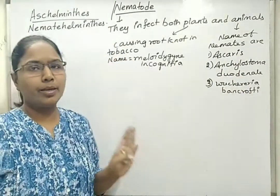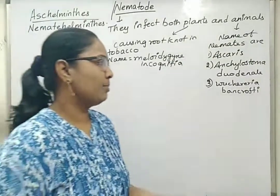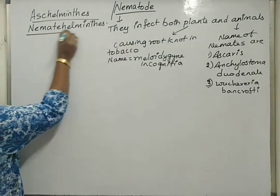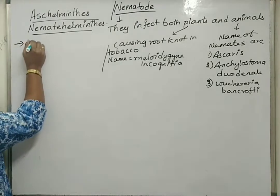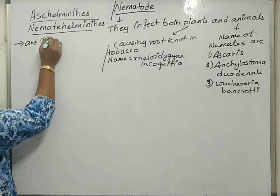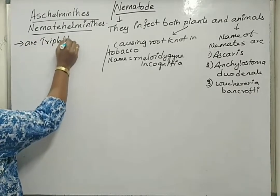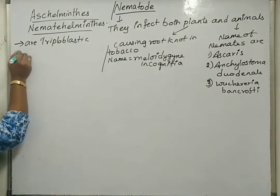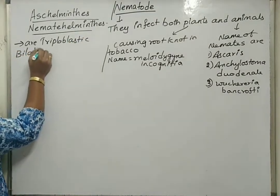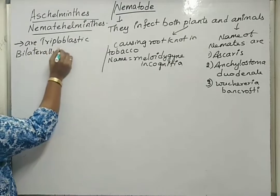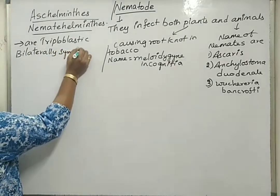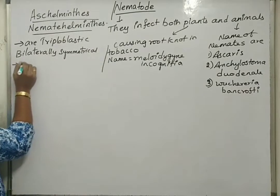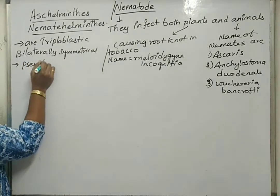Actually there are many nematodes, but according to the syllabus only three examples are mentioned. Nematodes are triploblastic and bilaterally symmetrical. Nematodes are pseudocoelomates.